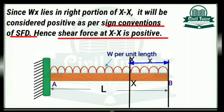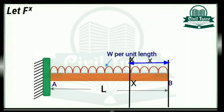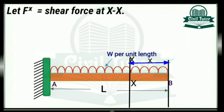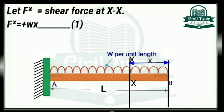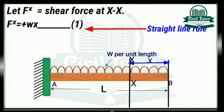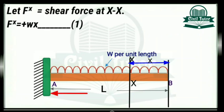Hence the shear force at section XX is positive. Let FX be the shear force at this section. FX will be equal to plus WX — let's mark this as equation 1 — which clearly indicates that equation 1 follows the straight line rule, meaning the shear force diagram for this span will be a straight line.